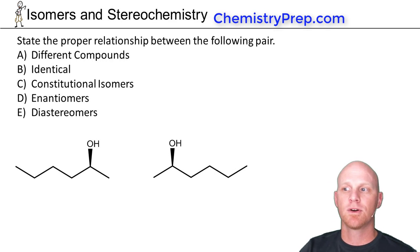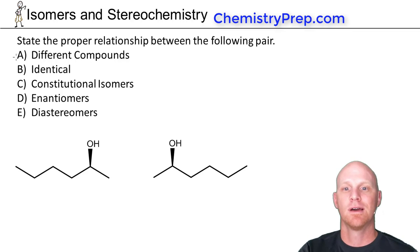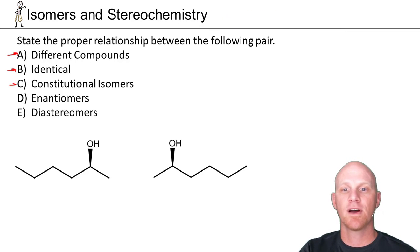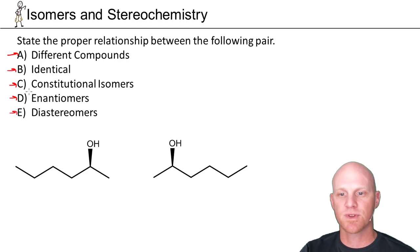From here we're going to look at several pairs of compounds and figure out: are they completely different compounds, are they identical, are they constitutional isomers, are they enantiomers, or are they diastereomers? Every one of these relationships is going to be one of these five.